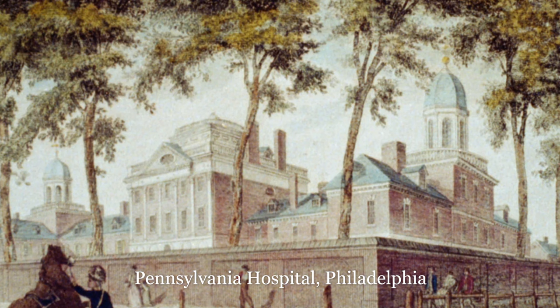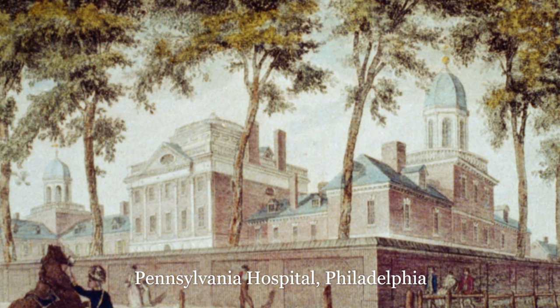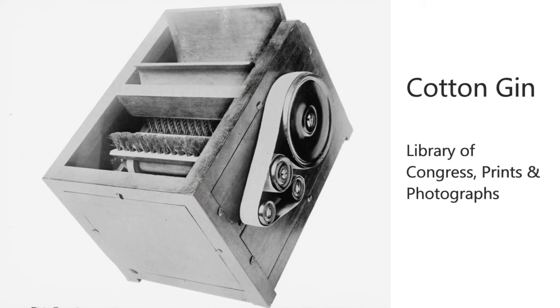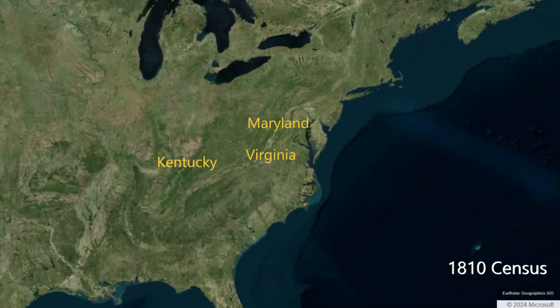Northern states had either abolished or were in the process of abolishing slavery. However, in the South, Eli Whitney's cotton gin had made cotton production much more widespread, and slavery becomes reinforced. The upper South, like Virginia, Maryland, and Kentucky, are tobacco states, whereas further south in states like South Carolina and Georgia, cotton is emerging as a dominant crop.